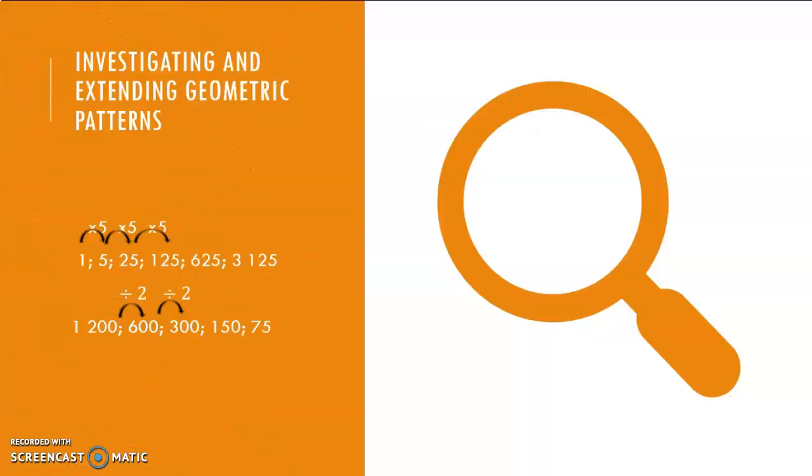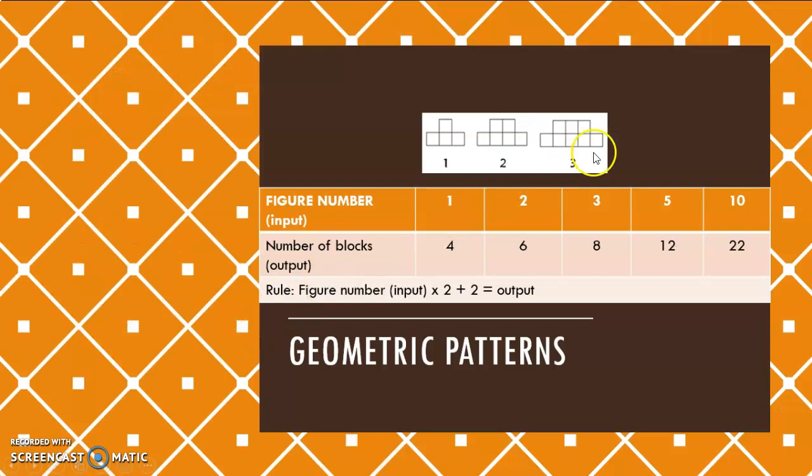So, let's quickly recap. When we have it written as a sequence, we find our rule and we apply it to both. If we have our figures drawn, we need to find the rule again and apply it to get our next input values, or if its input value is given to you.